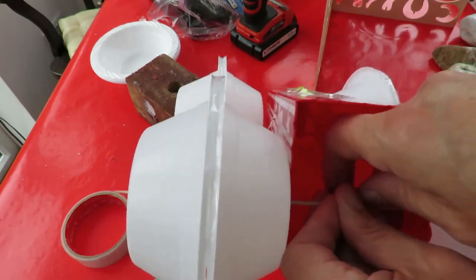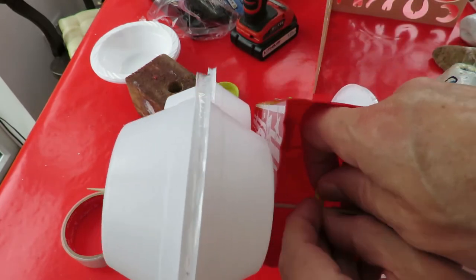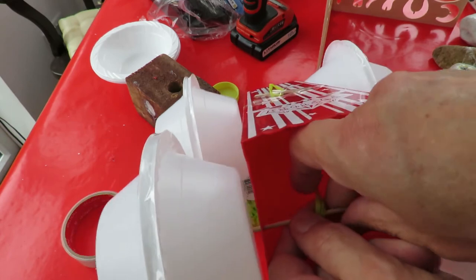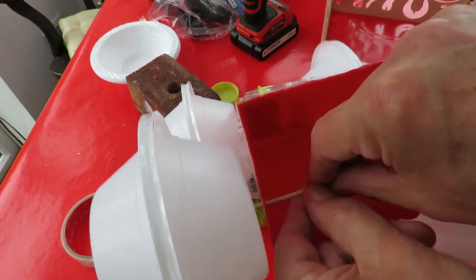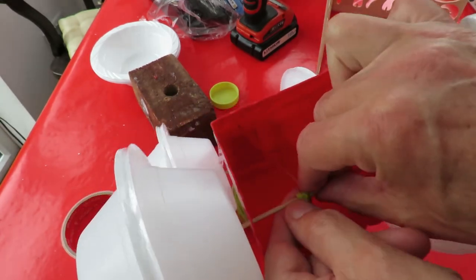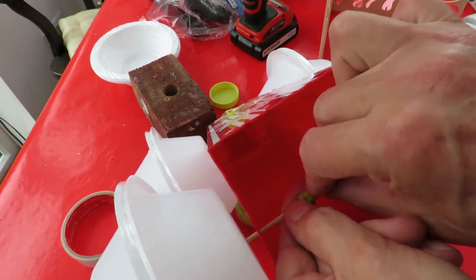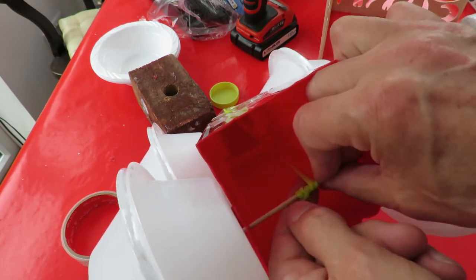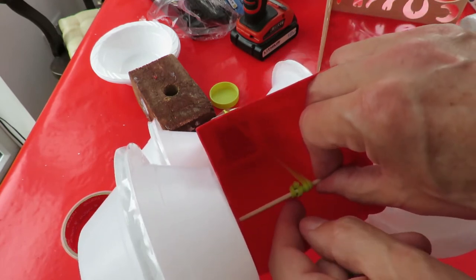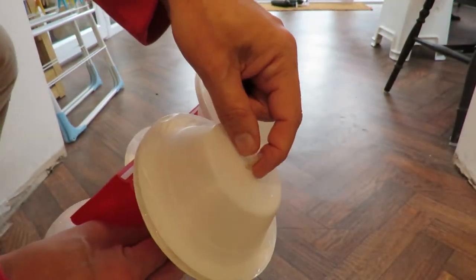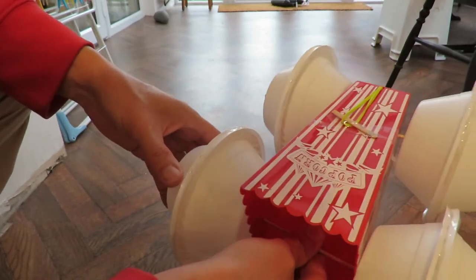Right, rubber band over the axle. There we go. Holds itself in place. Right, put a bit of sticky tape on the outside of the wheels to help hold the wheels onto the axle.